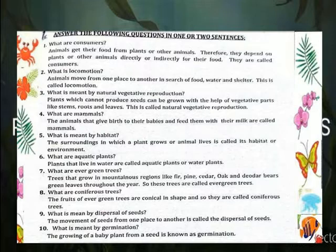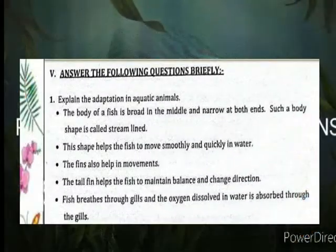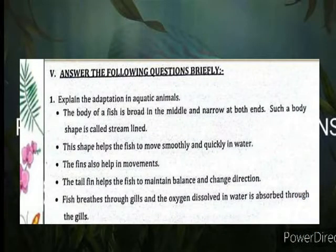Explain the adaptation in aquatic animals. The body of a fish is broad in the middle and narrow at both ends. Such a body shape is called streamlined. This shape helps the fish to move smoothly and quickly in water. The fins also help in movement.